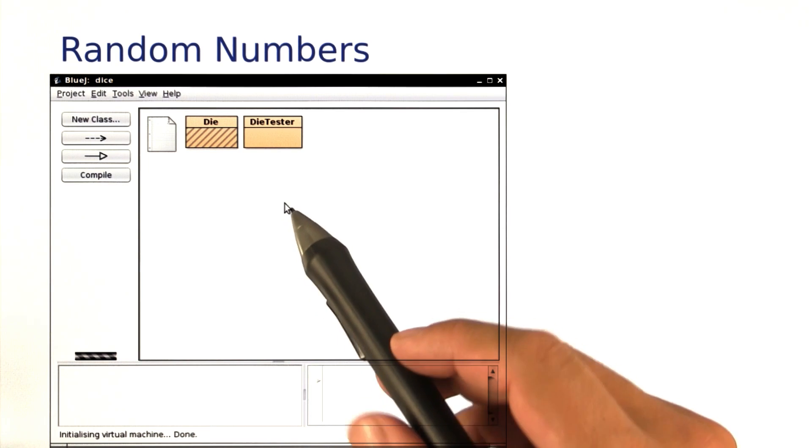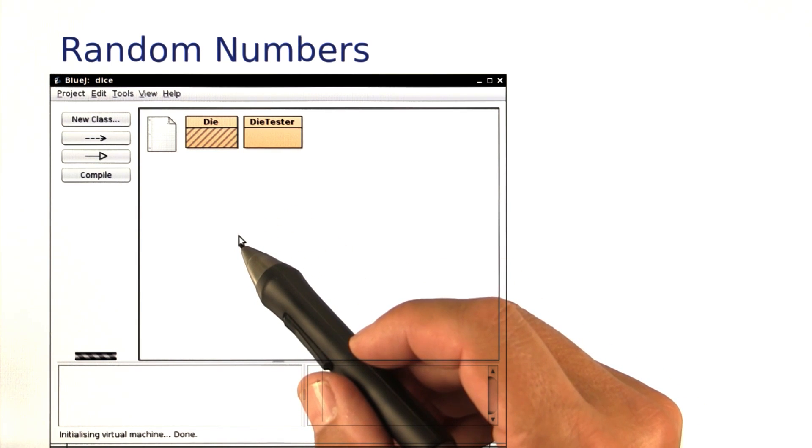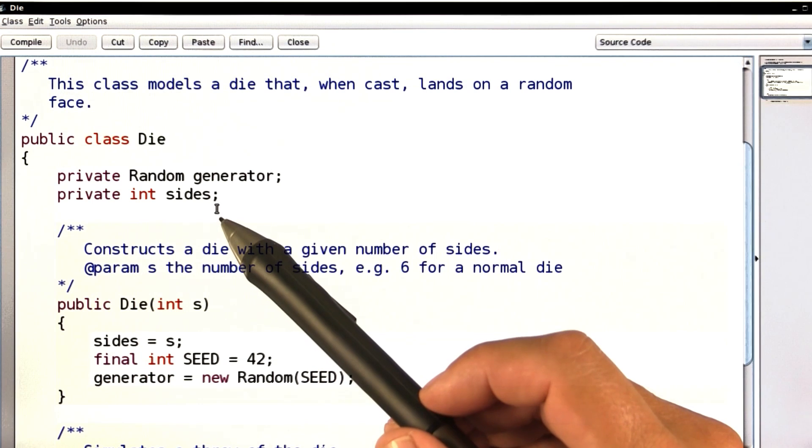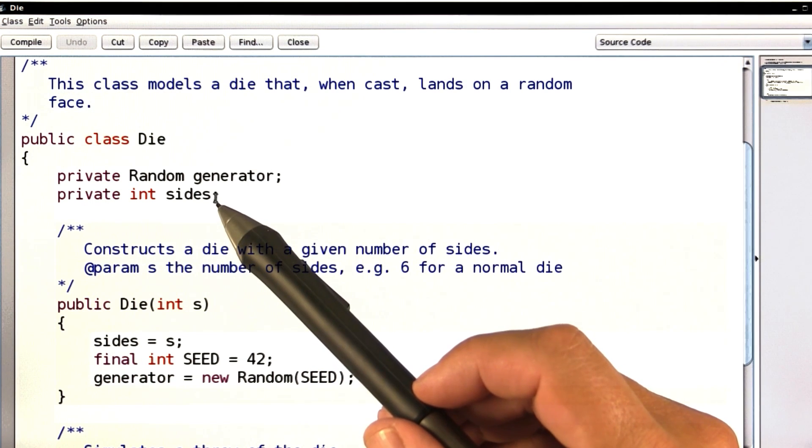Now, I'll let you play with this. We want to simulate a die so that we get random numbers between 1 and 6. Or actually, we might as well model a die with an arbitrary number of sides.